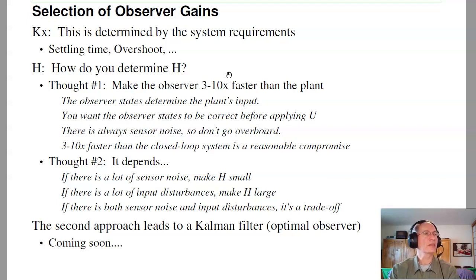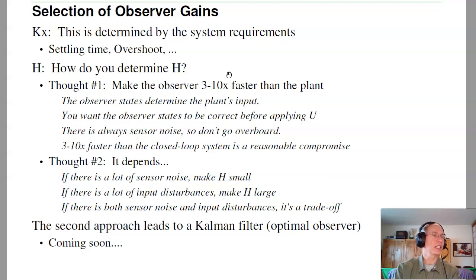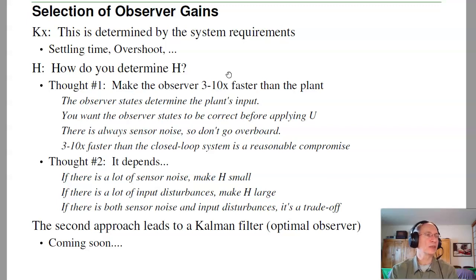This brings up a question: how do you determine H? K_x is pretty obvious — it comes from the system requirements. The settling time, overshoot, and so on tell you what the dominant pole should be. With pole placement, the other poles just have to be faster than the dominant pole so that the dominant pole dominates the response. H, on the other hand, it's not really clear how you determine H.